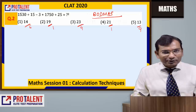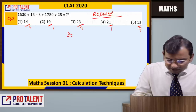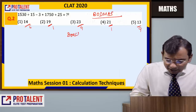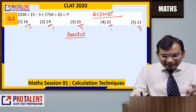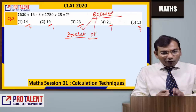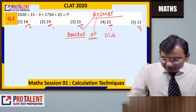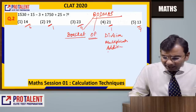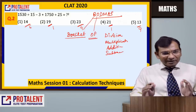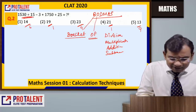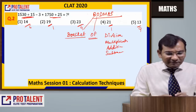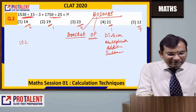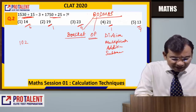We apply the BODMAS rule. BODMAS means you must follow the order: Bracket, Of, Division, Multiplication, Addition, Subtraction. So first apply division. 1530 divided by 15: 15 ones are 15, so 1530 divided by 15 is 102. That is easy — 15 twos are 30, so 1530 divided by 15 is 102.